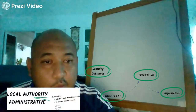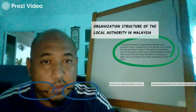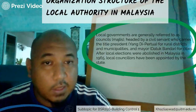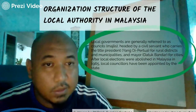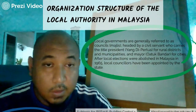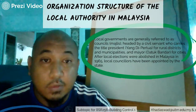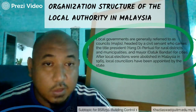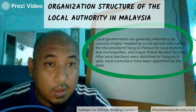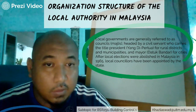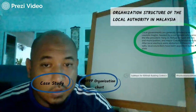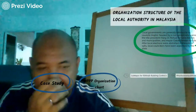The organization structure of local authorities in Malaysia — local governments are generally referred to as 'councils' (majlis), headed by a civil servant carrying the title Yang Dipertua (President) for rural districts and municipalities, and Mayor (Datuk Bandar) for cities. After local elections were abolished in Malaysia in 1965, councilors have been appointed by the state government.